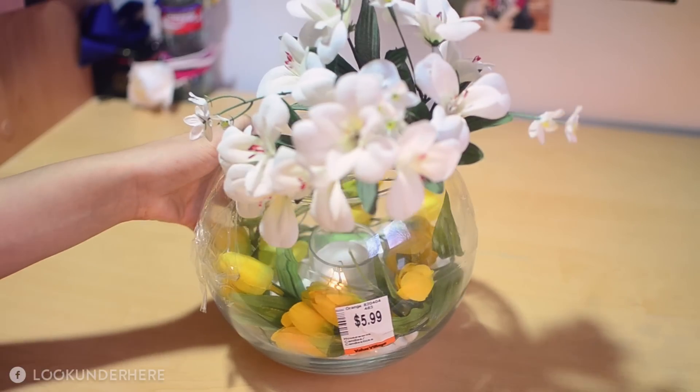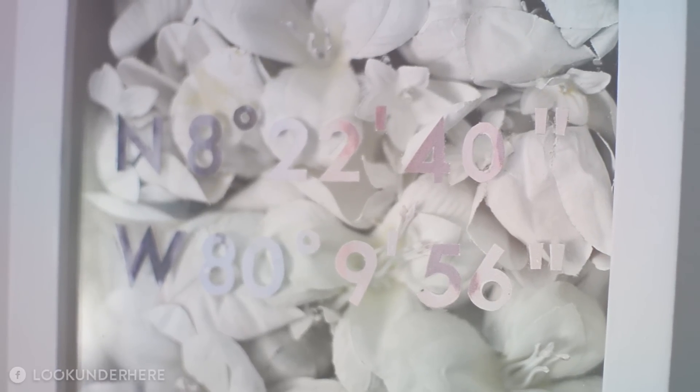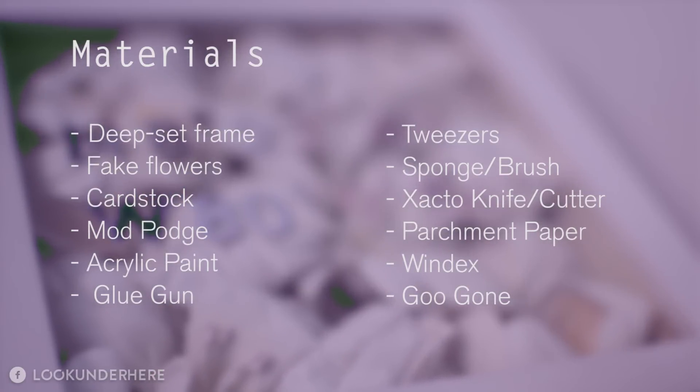I made a terrarium with the fishbowl—link is in the description if you're interested in that DIY. From there, I decided to combine these elements into a floral shadow box with coordinates of a location close to my heart. So let's get started with the materials listed here and in the description box.